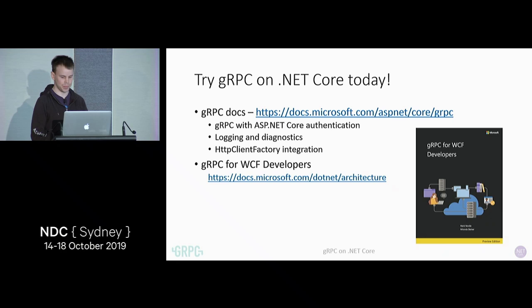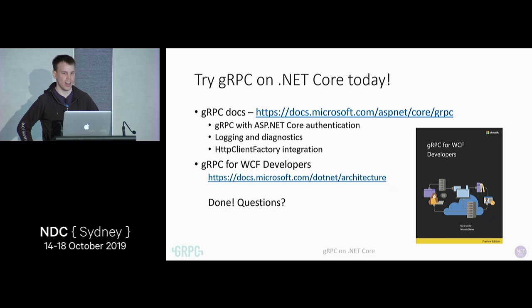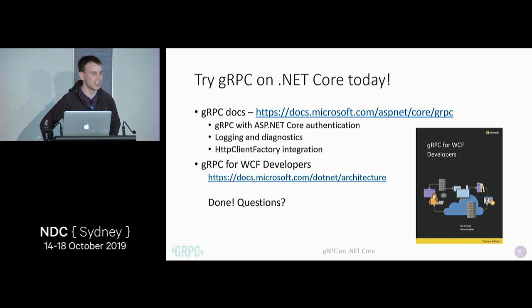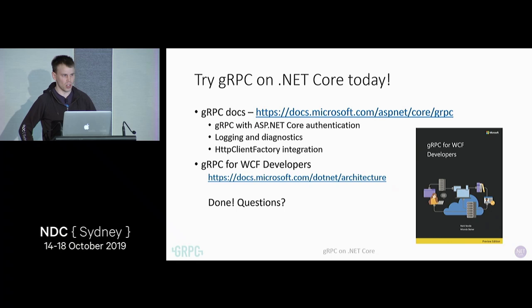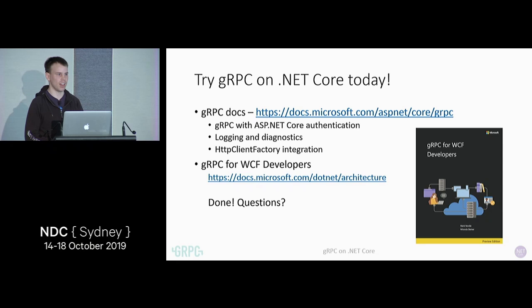We've got about 10 minutes for questions. The first question was about how gRPC works with services behind load balancers. One of the issues around gRPC is it's HTTP/2 only, and some load balancers and proxies don't properly support HTTP/2. If your proxy properly supports HTTP/2, then gRPC will just work through it like any other HTTP request. If it doesn't support HTTP/2, you won't be able to use it — you'd have to continue using REST or maybe use another technology like gRPC-web.